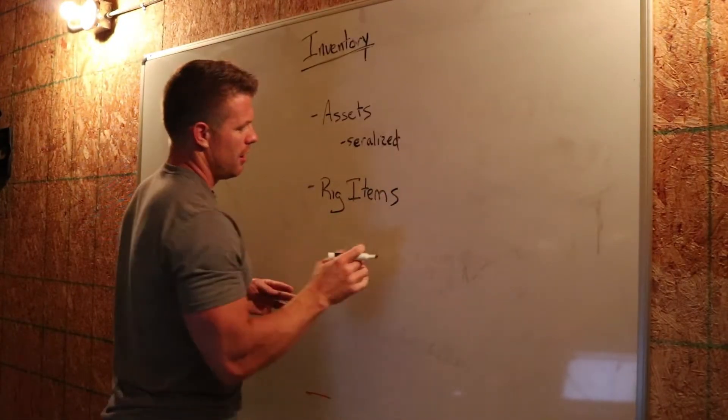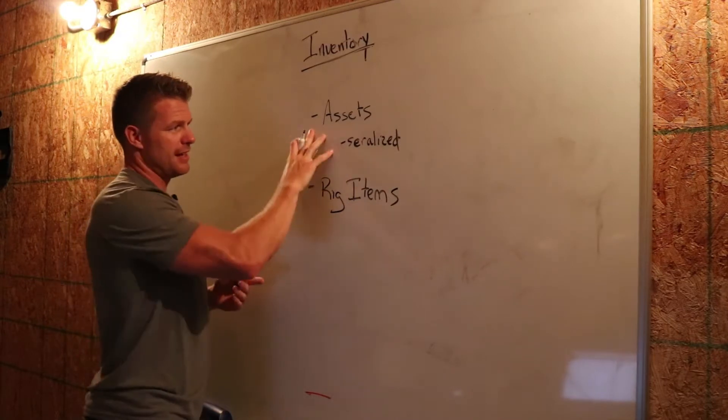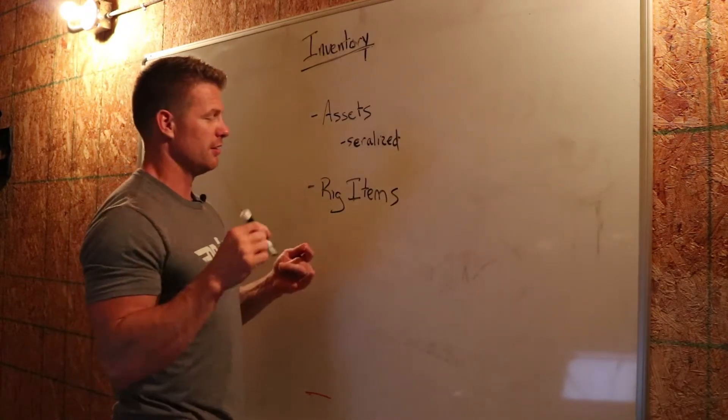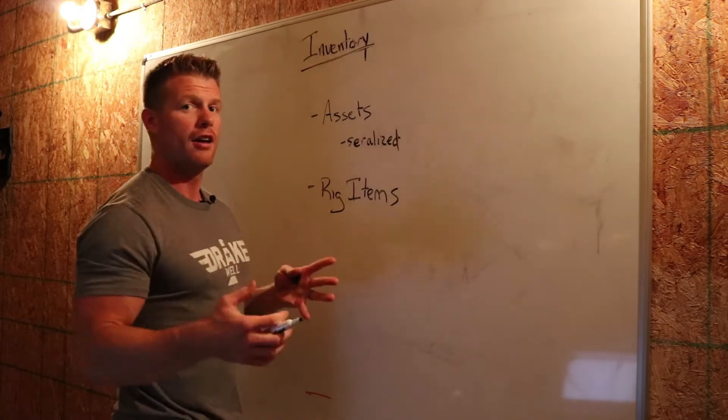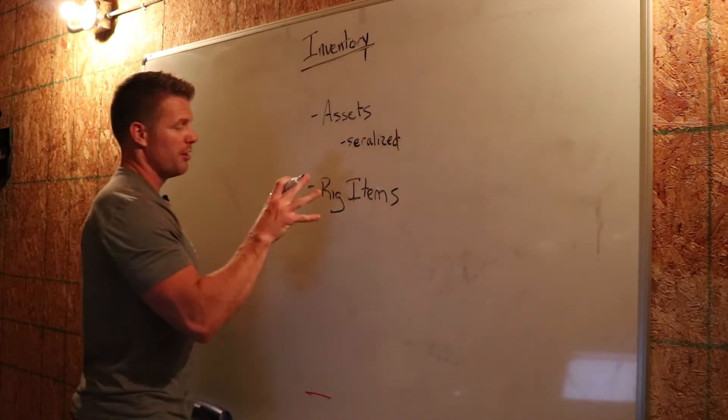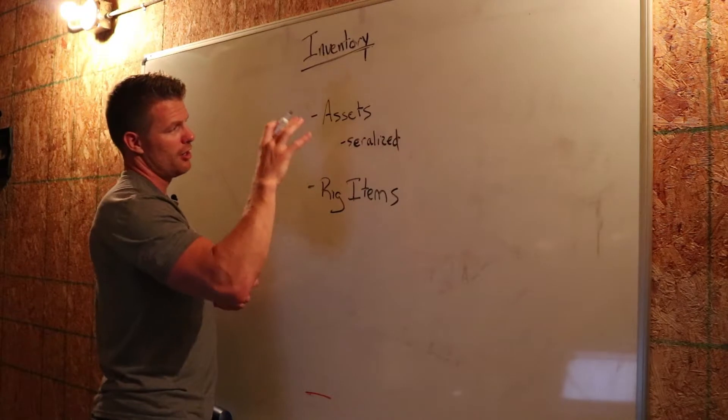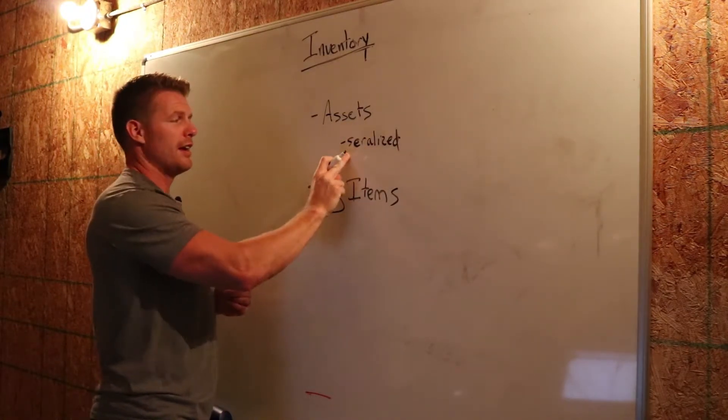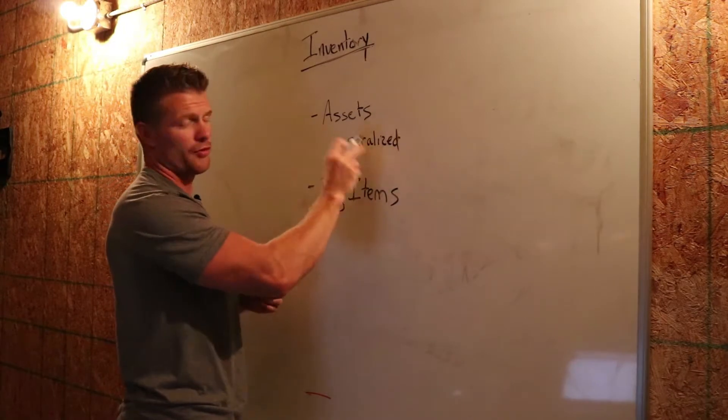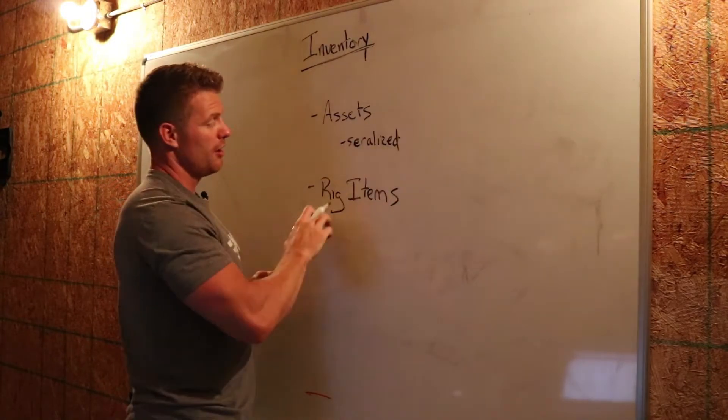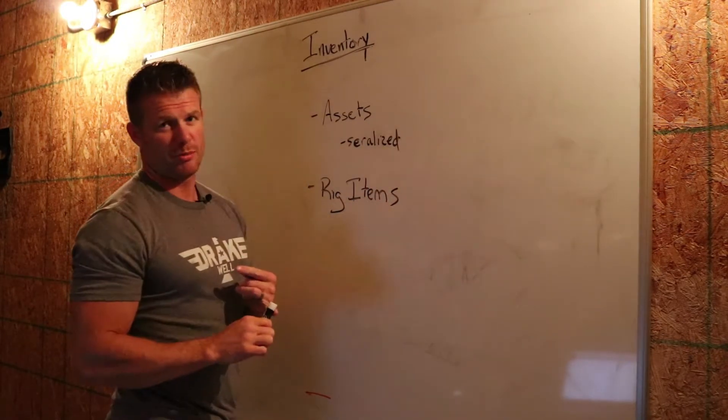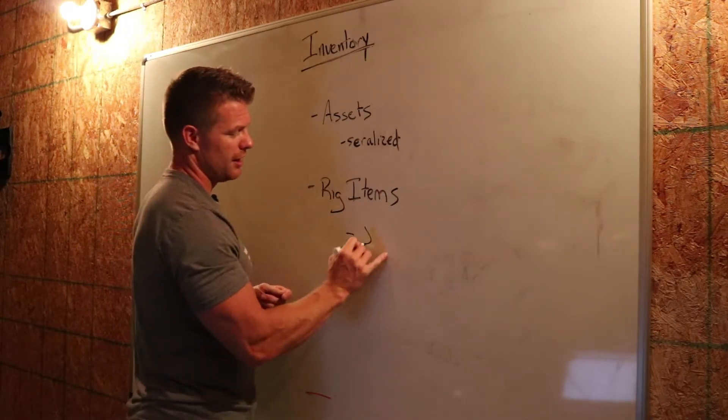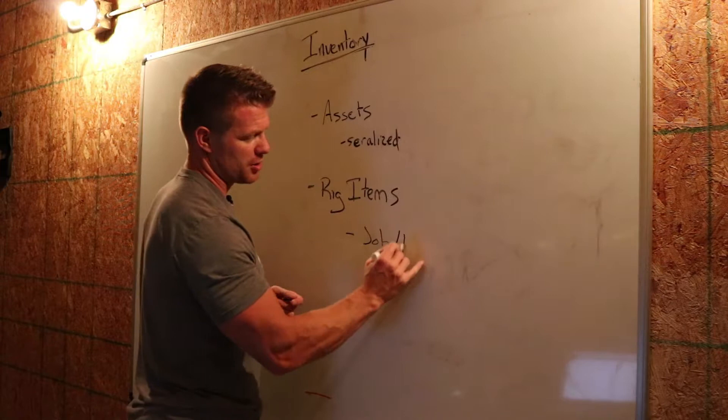What rig items are is they're very similar to assets in the fact that they're still like a motor, they're still a crossover sub, they're still top sub, all that kind of stuff you want to track for items you put on a BHA. The main difference is while assets are serialized, so you enter in a serial number, you can only ever enter this one serial number for this asset in Dracoil ever. Rig items, you enter a serial number if you want to, but we don't track them outside the job. So they only live within the job slash BHA.